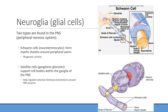Let's look at the cells making up the CNS. We have neuroglia — glial cells. In the peripheral nervous system, we have Schwann cells, which form myelin sheaths around peripheral axons. The myelin sheath speeds up conduction because an action potential jumps from node to node — these are called nodes of Ranvier — rather than traveling through every sodium channel along the axon.